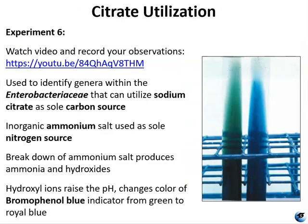The citrate test was designed to identify specific genera within the Enterobacteriaceae family that can utilize sodium citrate as their sole carbon source, using the enzyme citrate permease to transport citrate into the cell and metabolize it by way of the fermentative pathway. Inorganic ammonium salt is used as the sole nitrogen source. Breakdown of ammonium salt produces ammonia and hydroxides, which raises the pH. This changes the color from bromophenol blue indicator — it starts out as green before inoculation, and if it stays green it is negative, meaning the bacteria cannot produce citrate permease.